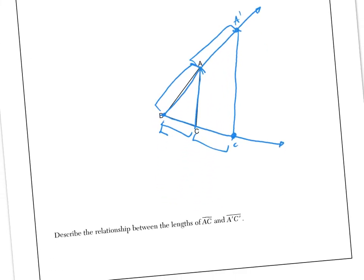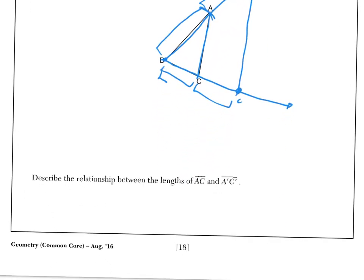Now that's two points of this question. The second two points should be a piece of cake. It says describe the relationship between the lengths of AC and A'C'. Okay, so this is AC and this is A'C'. Now the dilation has a scale factor of two, so the relationship is this: we know that A'C' is twice the length of AC.